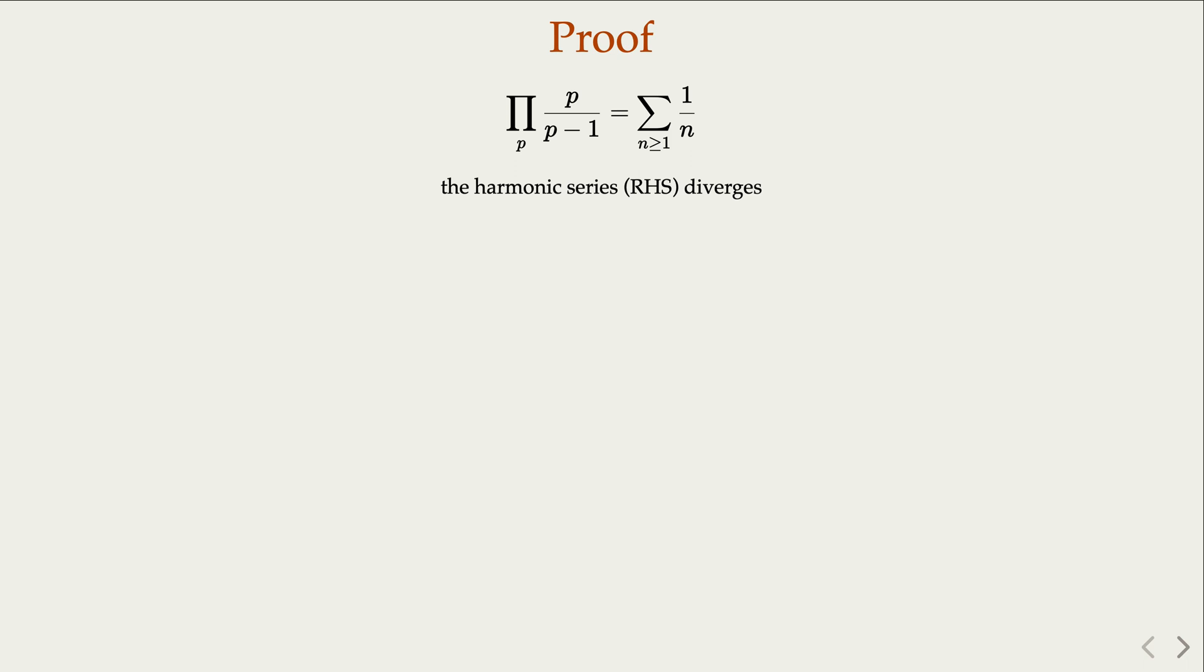Which means the left hand side cannot be finite terms. Why? Because each term is finite. The product multiplication of a finite number of finite values is going to be finite, no matter how big that value is. So the left hand side cannot have finite terms. In other words, the left hand side has an infinite number of terms. Of course, each term corresponds to a prime number. So that shows there are an infinite number of prime numbers.